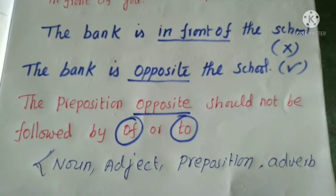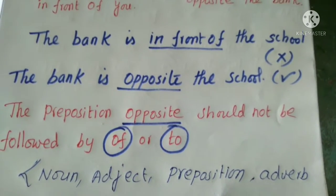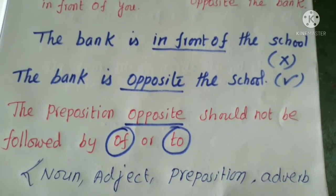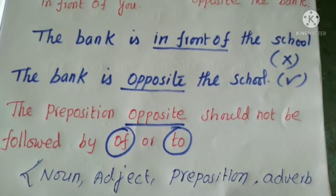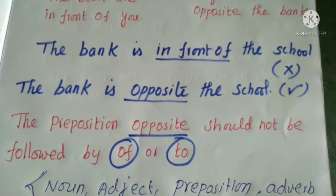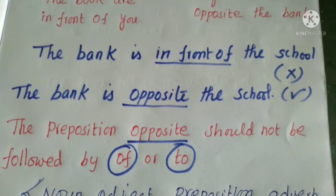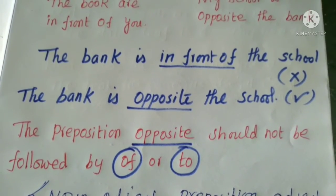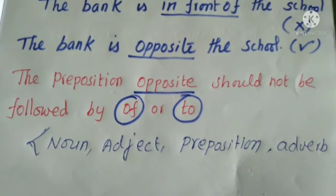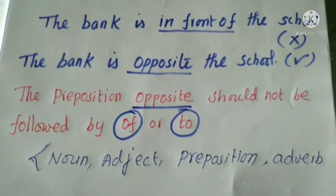Note that 'opposite' as a preposition should not take 'of' or 'to.' However, if you want to use it with a preposition, you can say 'The bank is opposite to the school.' 'Opposite' can be used as a preposition, and also as a noun, adjective, and adverb.